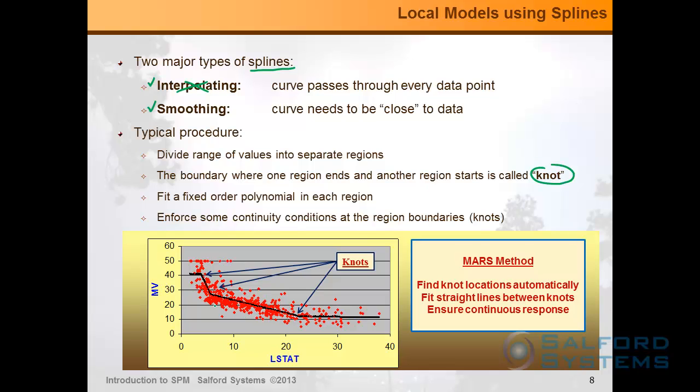The smoothing splines, where the curve needs to be close to data, not necessarily passing through every data point. And the typical procedure would be divide the range of values into separate regions, and the boundary where one region ends and another region starts will be called knot. Now here is a quick illustration of why this is useful. I took Boston housing data set that we are working with, and I took the target variable MV, house values here, and only one predictor L stat for the simplicity of use, which is percent low socioeconomic status, or percent of poor people living in the neighborhood.